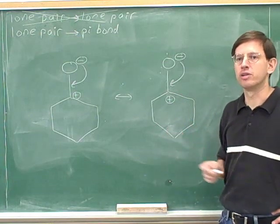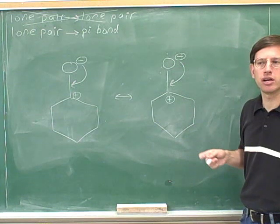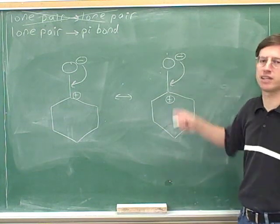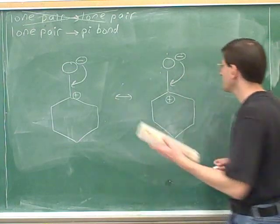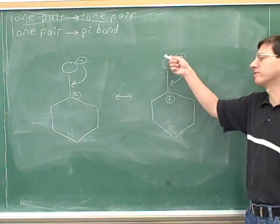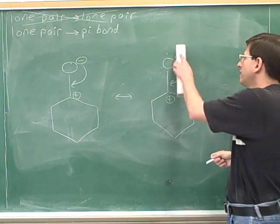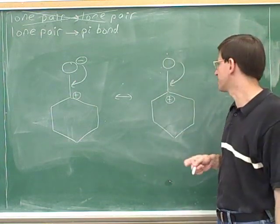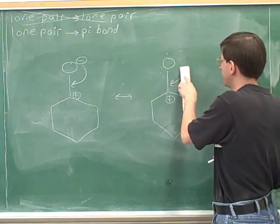So we haven't seen this convention before, but the convention is that if you put the tail on a negative charge, it means that the electrons are coming from a lone pair. So where are the electrons coming from? They're coming from a lone pair. Since we haven't drawn the lone pair, I don't need to erase it. However, since this atom is losing the lone pair, it should become one step less negative. So I can erase the negative charge.